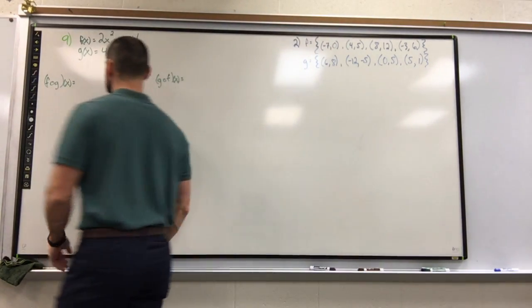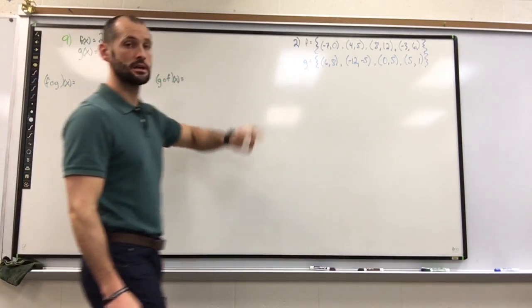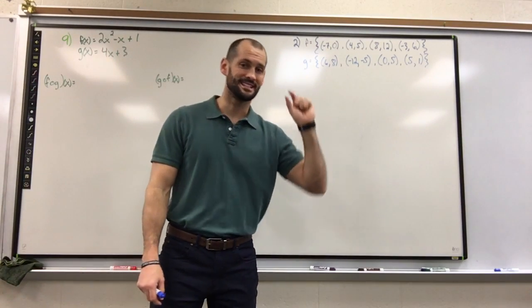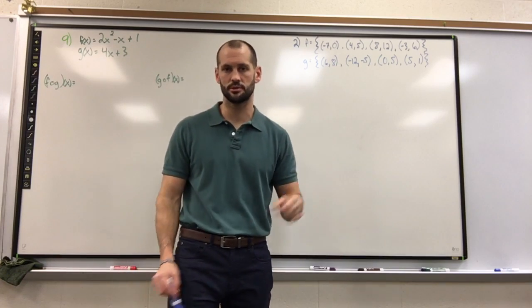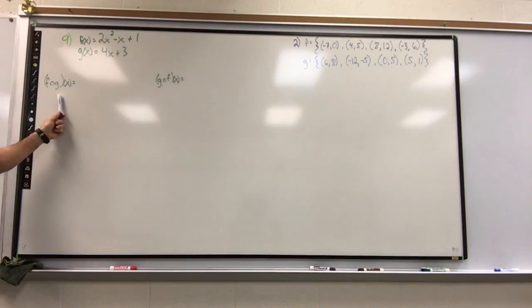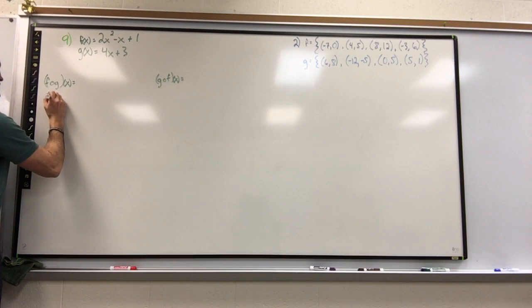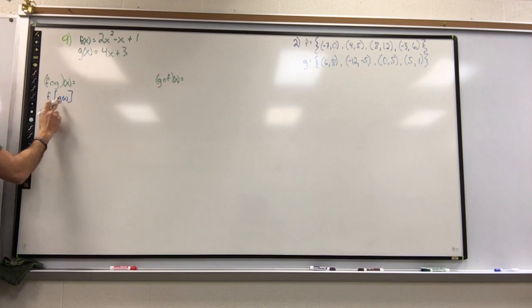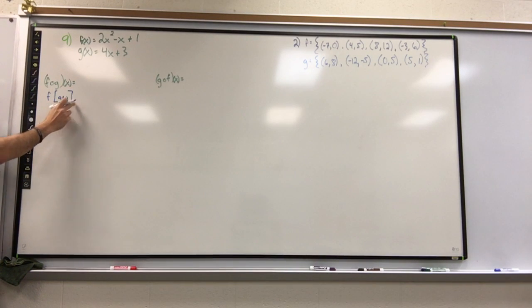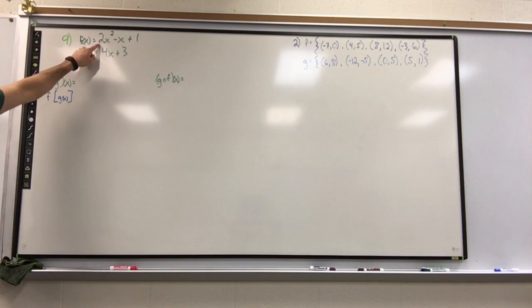So let's take a look right away for f of g of x. Now this goes true for all of these: whatever function is mentioned second is really where you start. So when it says f of g of x, first off this really means f of (g of x), meaning the g function will become the input in the f function. So take a look at the f function: it's two times its input squared minus the input plus one.